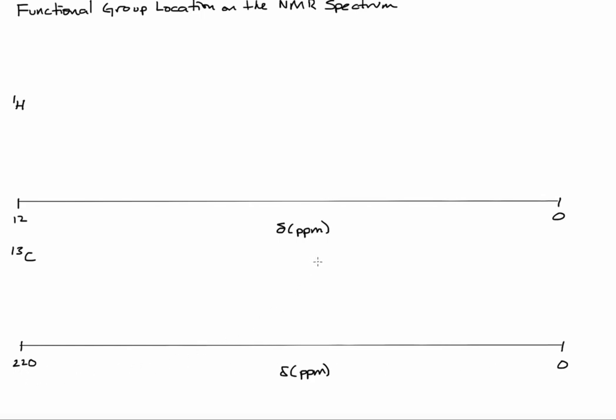So let's first talk about what does this unit parts per million mean. So the chemical shift delta is defined as the distance downfield from tetramethylsilane.